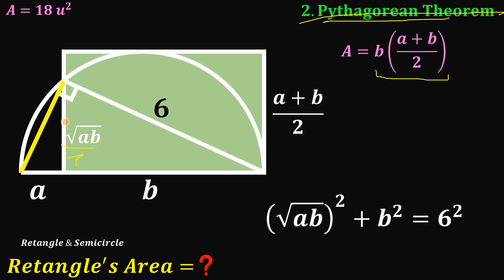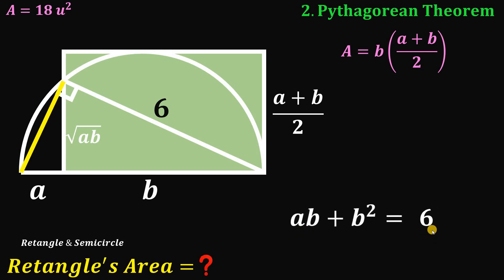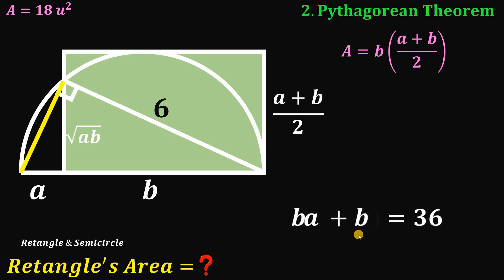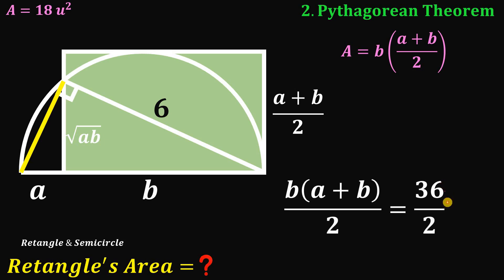We have: (√(ab))² + b² = 6², which gives ab + b² = 36. Notice there is a common factor of b, so we factor out b to get b(a + b) = 36. Dividing both sides by 2 gives b(a + b)/2 = 18.